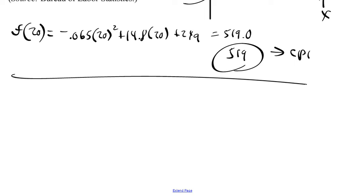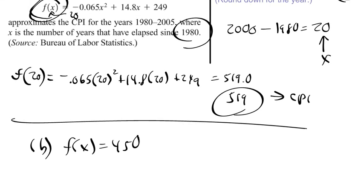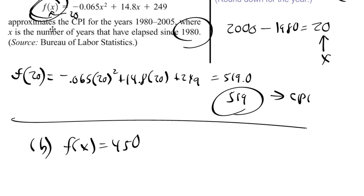So we're going to say f(x) = 450. Now we're just going to plug that into our equation and solve for x. So I'm going to replace f(x) with 450. So 450 = -0.065x² + 14.8x + 249.